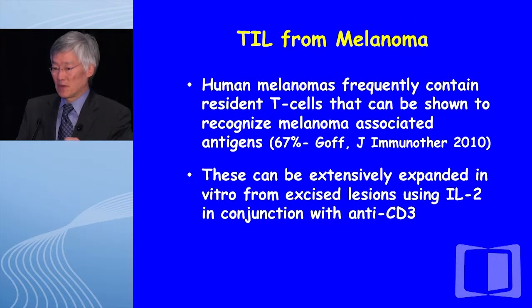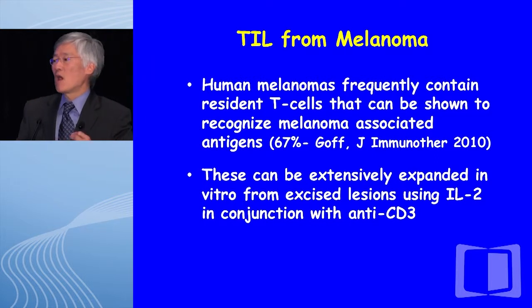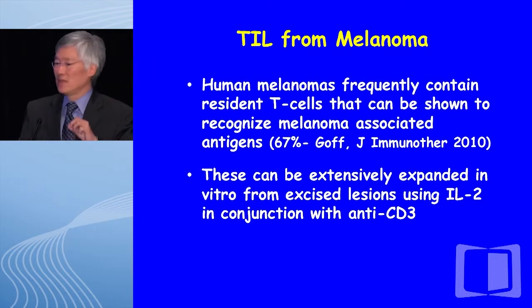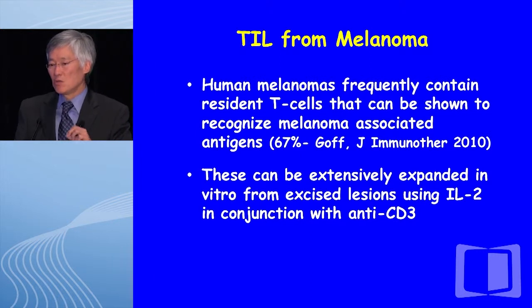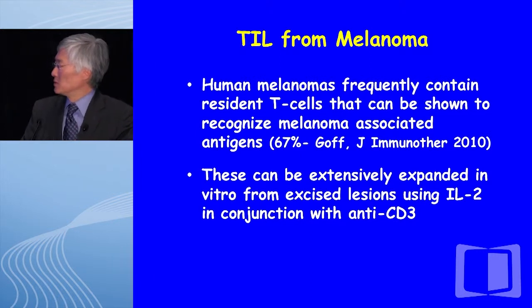The model for us has been tumor-infiltrating lymphocytes from melanoma. It's been long known that human melanomas very frequently contain cells with the immunological capability to recognize the autochthonous tumor. When Stephanie Goff and the surgery branch looked at this with the crude techniques available, about two-thirds of all human melanomas could be demonstrated in the laboratory to have specific recognition of the autologous tumor from which they were derived.